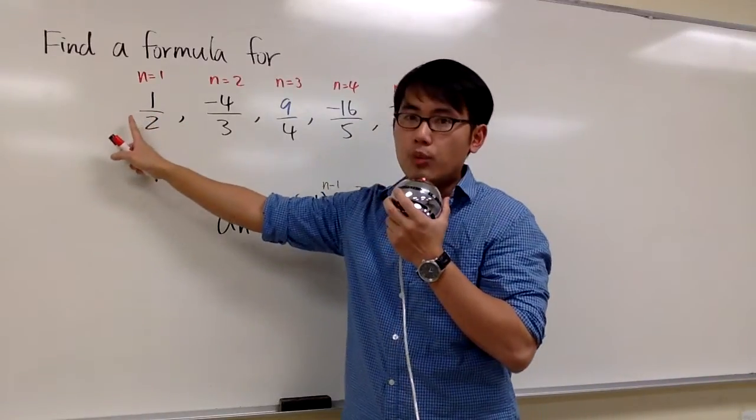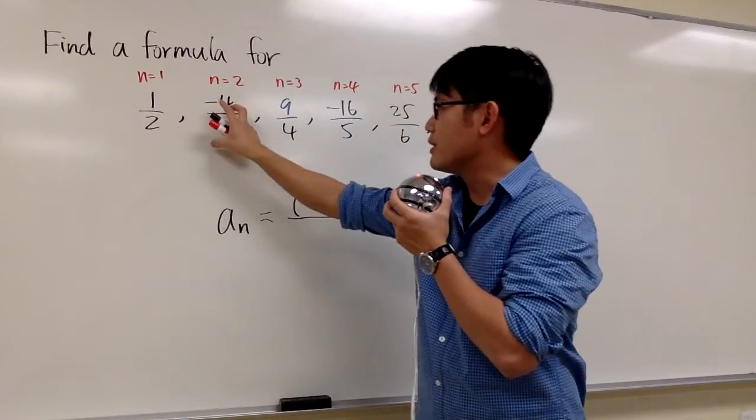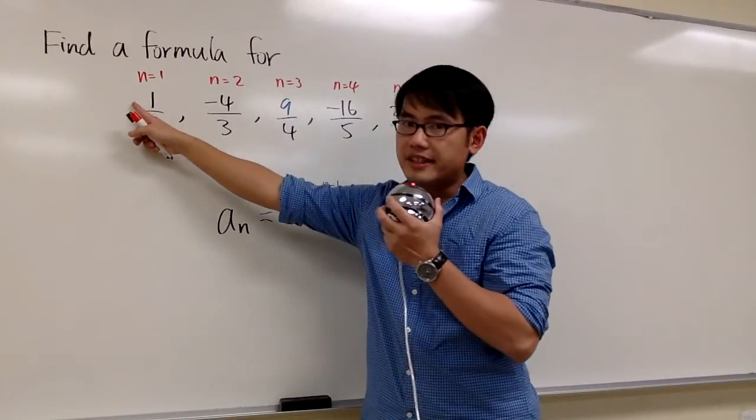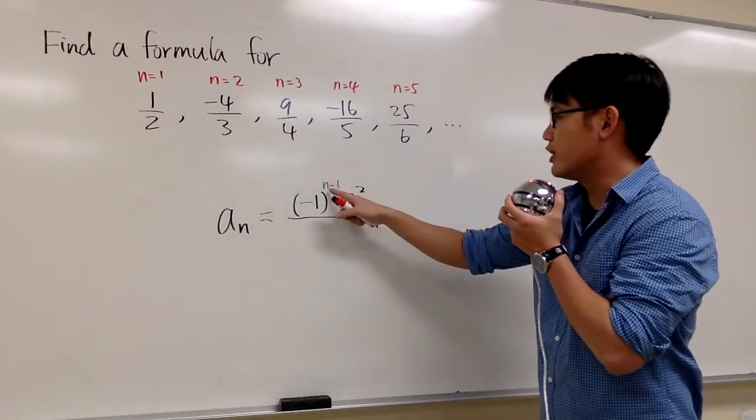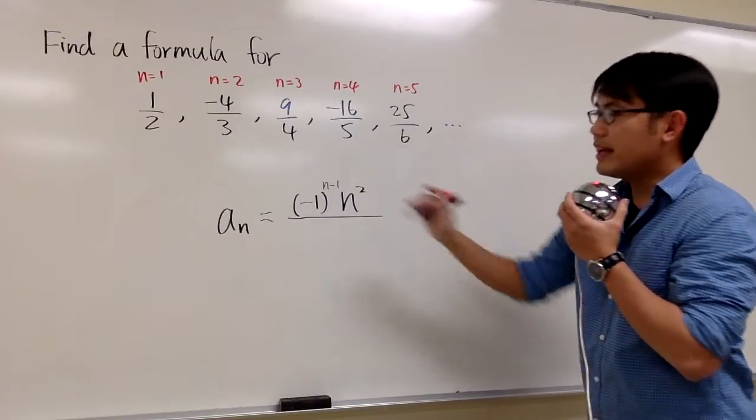You can do it with n plus 1, but that works when you have a term starting with positive, then the next one is negative, positive, negative, and so on. If you start with a negative term, then you can change this to only n. That will work.